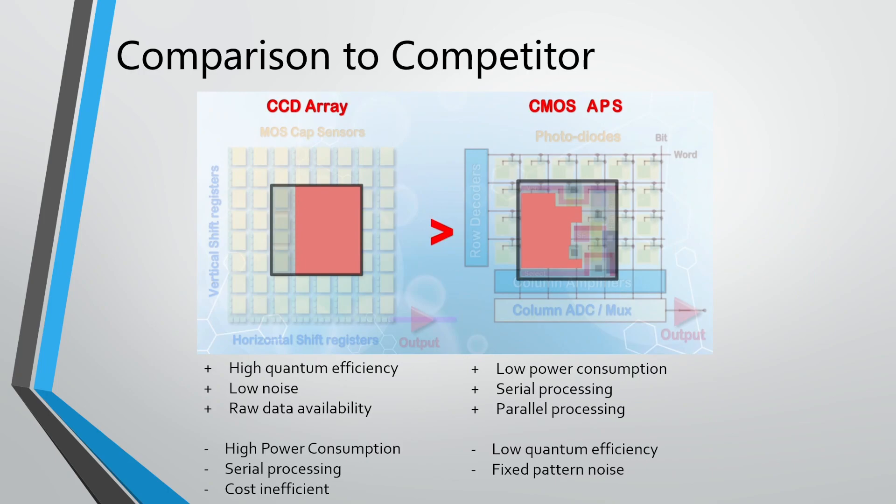Nowadays, the biggest competitor of CCD array is the CMOS APS. CMOS APS doesn't need a potential well to store charges because they are converted to voltage at the pixel. The generated charges cannot drive the loading capacitance in the charge-to-voltage circuit, so an amplifier is needed at each pixel — which was not possible in early days due to large transistor size. Even today, the amplifier still takes some space in the CMOS APS. Therefore, the quantum efficiency of the CCD array is higher than CMOS, because the photon-to-electron conversion area is larger as a percentage. CCD array also has no fixed-pattern noise compared to CMOS, because every charge is measured by the same circuit.